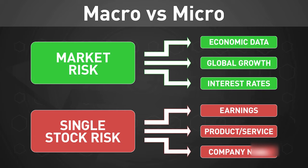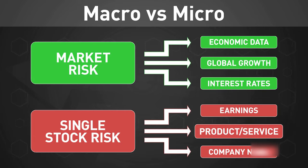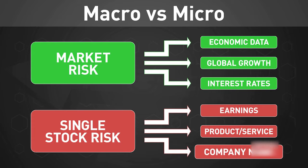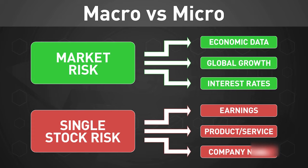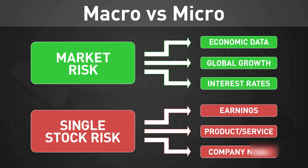Single-stock risk is a little different, with common examples being an earnings report, a product or service success or failure, or any major company news. These are only going to impact one or a small group of stocks significantly, while stocks not directly impacted by these events will just go on business as usual.